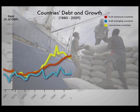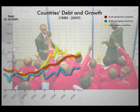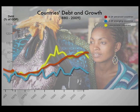Debt ratios in low-income countries, pictured here in yellow, rose sharply after 1980 as they experienced a period of low growth and frequent shocks, and borrowed heavily, often at high interest rates. Their debt ratios have come down in recent years thanks to debt relief and better institutions and policies.